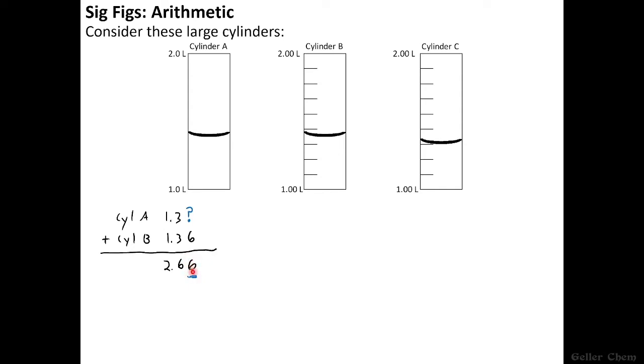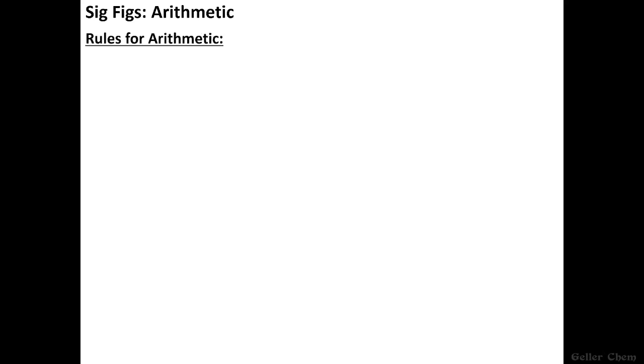And so at this point, this is no longer a reasonable estimate, and we should just round to the tenths place. That hundredths place is no longer a reasonable estimate due to cylinder A. And so this brings us to our first rule of arithmetic. For addition and subtraction, the result will carry the same number of decimal places as the quantity with the fewest decimal places.